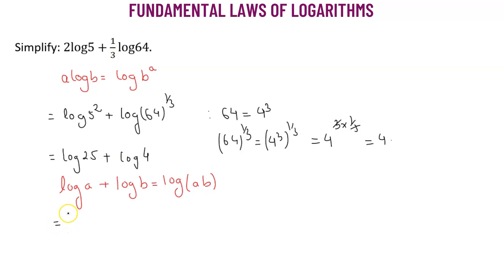That means our two terms, they are like terms. They are like terms because when the base is not provided, it's by default considered to be 10. So the base is exactly the same. So that means they are like terms. And we can use this property to get log of 25 multiplied by 4.